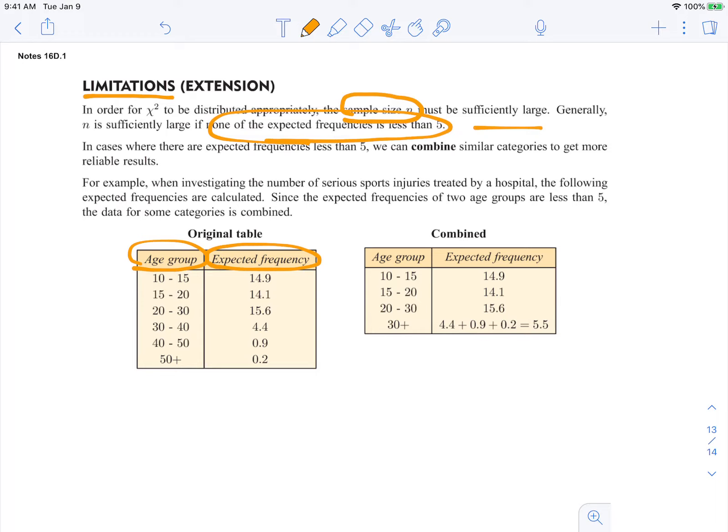So in the new combined chart, we kept the 10 to 15 from the original chart, and then the 15 to 20 we kept, and then the 20 to 30 we kept, and then we combined these three totals. So anyone 30 and older, we added their expected frequencies.